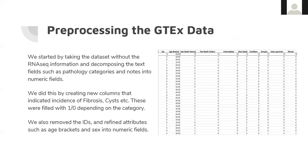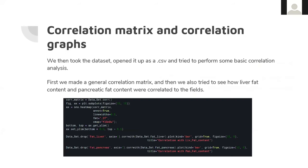The first thing we did was take the dataset which did not have RNA sequence information and try to decompose it. For example, we had the Hardy scale, so we divided it into five categories and assigned zero/one values based on which category each sample falls into. We did the same with pathology — for example, for livers, whether the individual had fibrosis, cysts, or not. Then we visualized this data using correlation graphs and matrices.